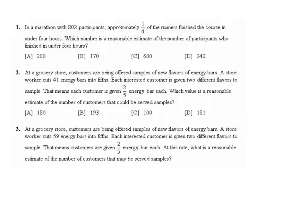Question one says, in a marathon with 802 participants, approximately one-fourth of the runners finished the course in under four hours. Which number is a reasonable estimate of the number of participants who finished in under four hours?